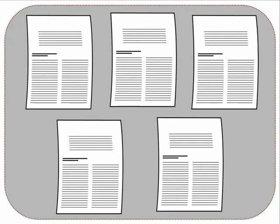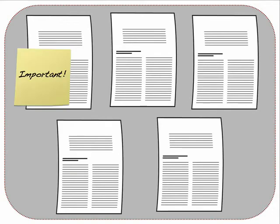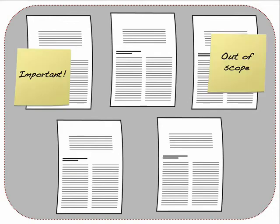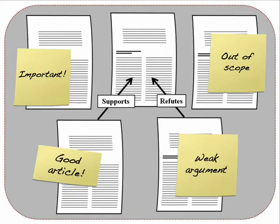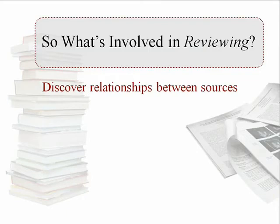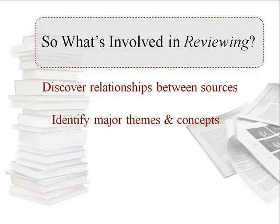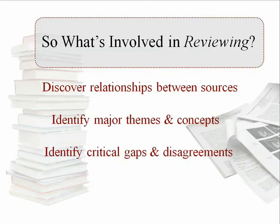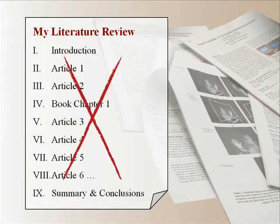When you work with the literature, you will read and critically examine articles and books to see what's important or out of scope, and analyze arguments for strengths and weaknesses. It is important to look for relationships between publications. Some important relationships you might discover include major themes and important concepts, as well as critical gaps and disagreements. But don't fall into the trap of making your review a laundry list of summaries of the works you read — a literature review is not an annotated bibliography. Your goal should be to go one step further and integrate and synthesize what you find in the literature into something new.